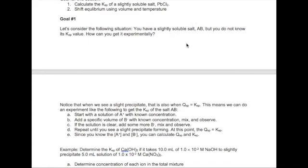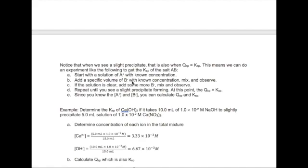We can actually use the procedure we just discussed with Qsp and Ksp, which is adding in small amounts the counter ion B minus to a solution containing A plus. When we add enough B minus to see a slight amount of precipitate, we know that at that point, the Qsp is equal to the Ksp. Since we know the concentration of A plus and B minus in solution, we can calculate the Qsp and therefore the Ksp for the salt.